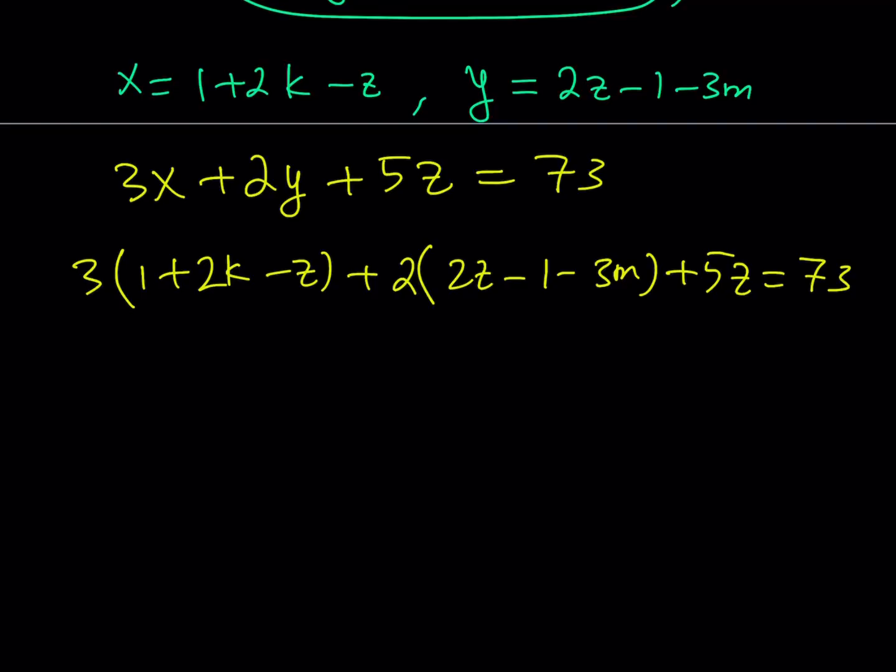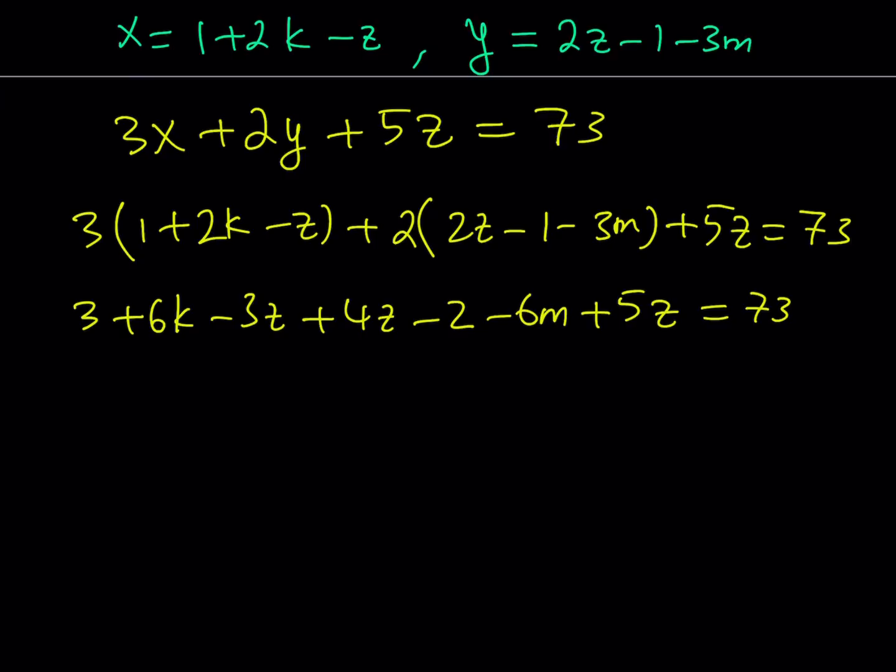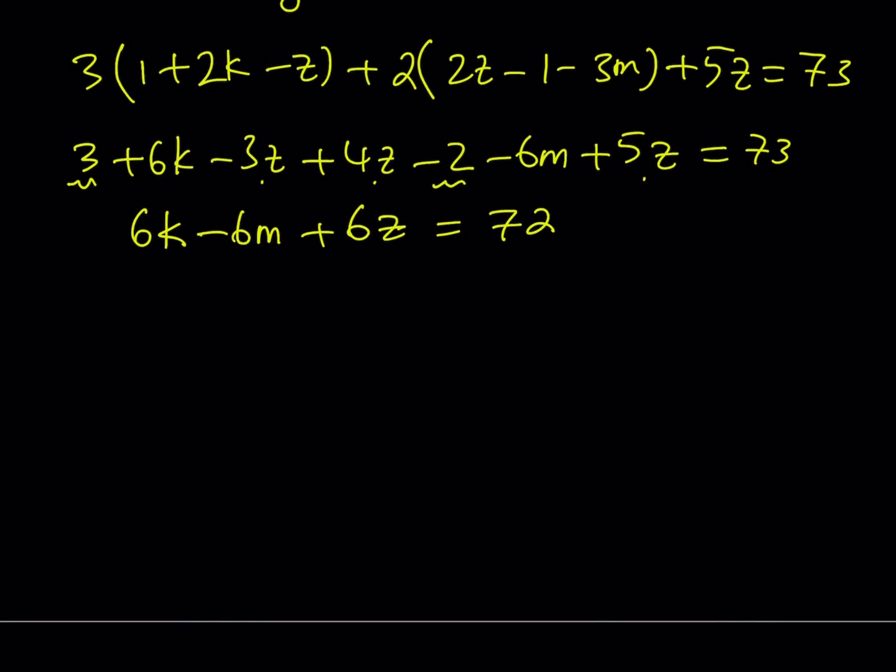Let's simplify this. That's going to look like 3 plus 6k minus 3z plus 4z minus 2 minus 6m plus 5z equals 73. From here, I get 6k minus 6m. And z is going to give me, let's see, negative 3z plus 4z plus 5z is going to be 6z, which is cool. And then I have the 3 minus 2, which is 1. If you subtract 1 from 73, you get 72. Notice that everything divides out nicely.